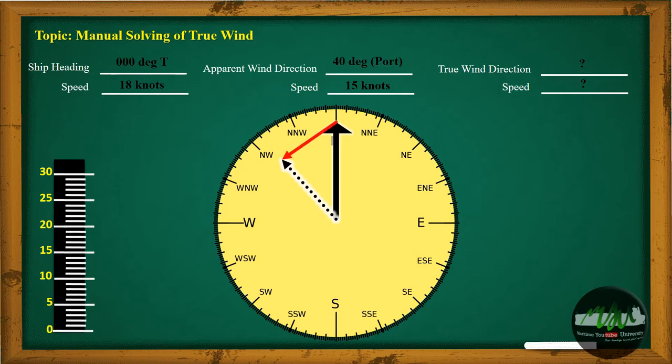The formed vector, colored in red, is the vector of the true wind. Now, bring that vector into the scale to measure its length.